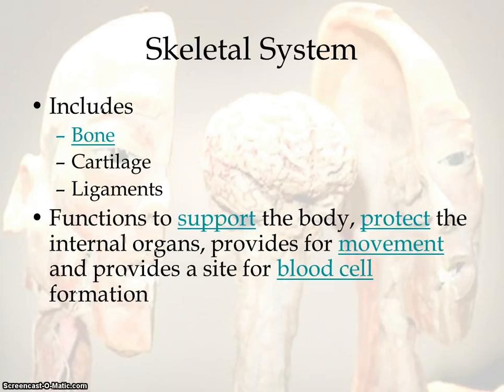Let's look at some of this stuff. We know that the skeletal system — we know we have a skeleton, we know it's our endoskeleton. Every vertebrate organism on the planet is going to have an endoskeleton. Its functions are support, protection, helps with movement, and actually provides blood cell formation — it's a site where our blood cells are replenished and reproduced.